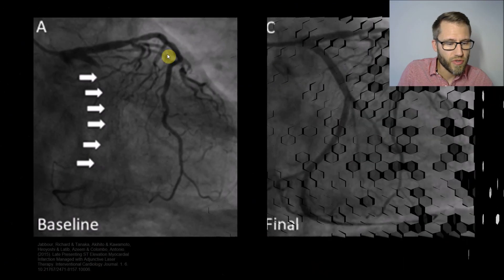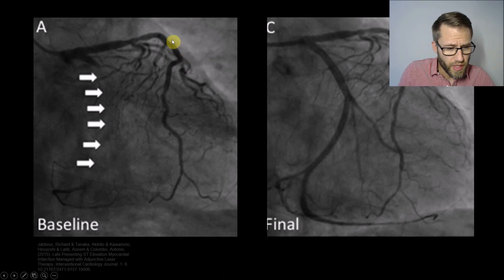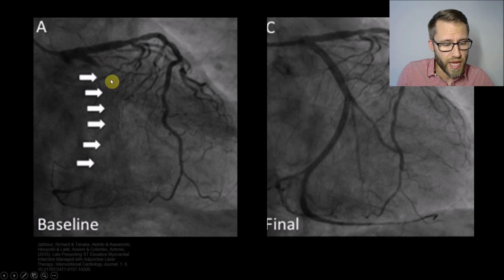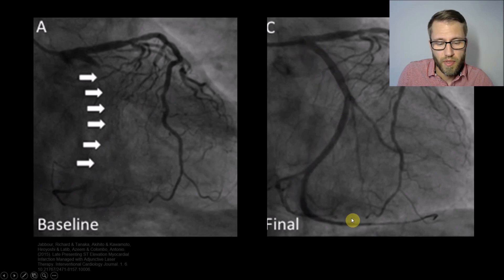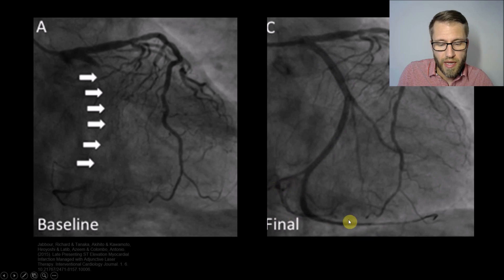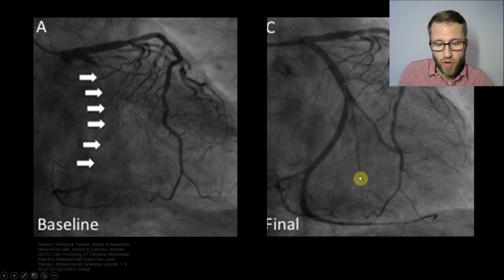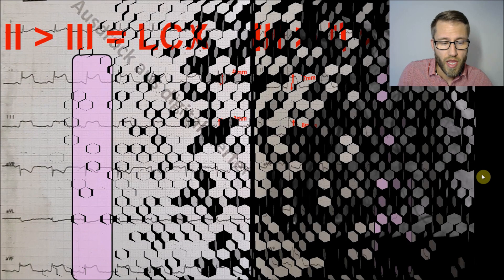If you look at the coronary angiogram in this case, you would find a proximal occlusion of the LCX. You can see some distal parts retrogradely with retrograde flow. After revascularizing this LCX, you see what a large vessel this is — with the left PDA supplying the inferior part of the left ventricle and the posterolateral part covered by these obtuse marginal branches.